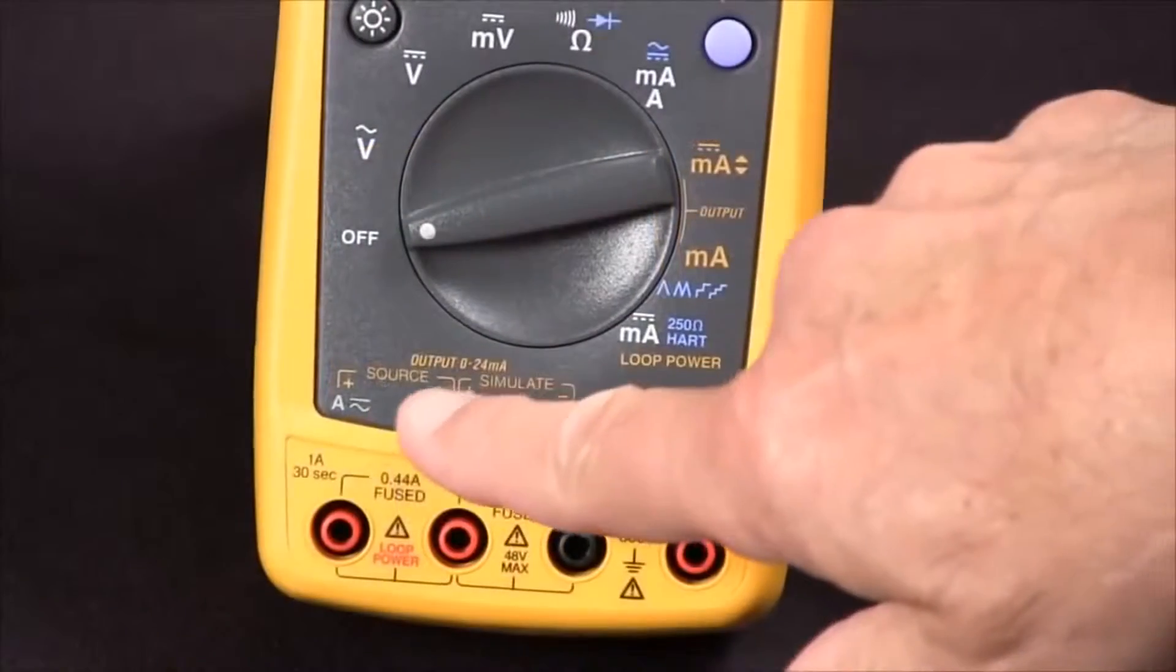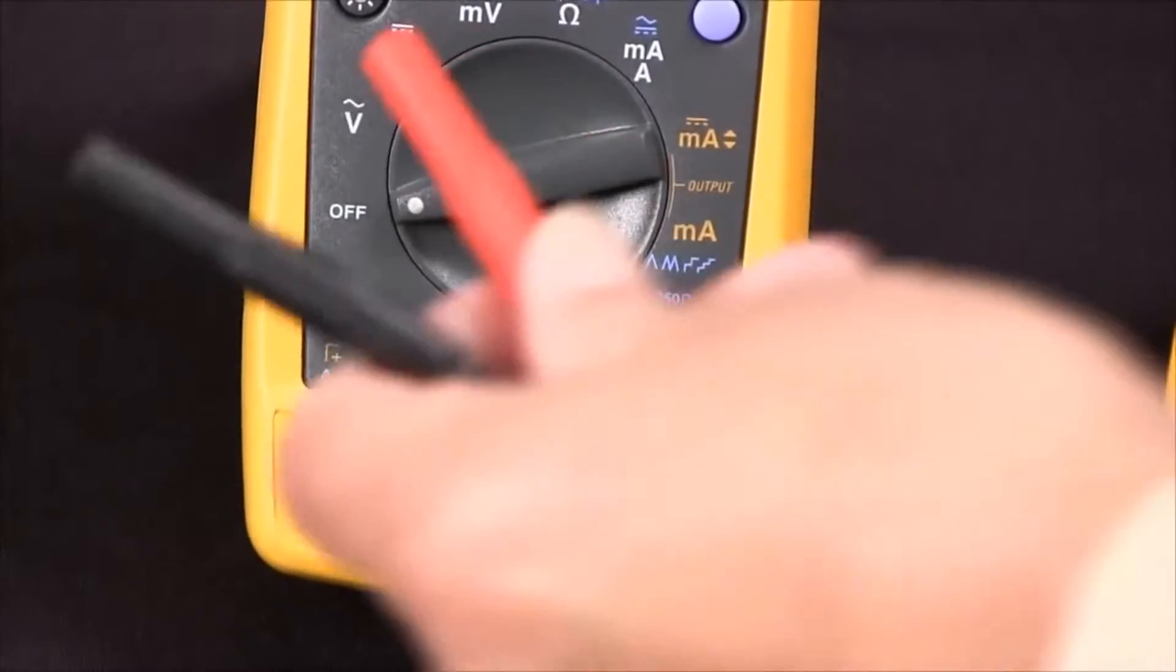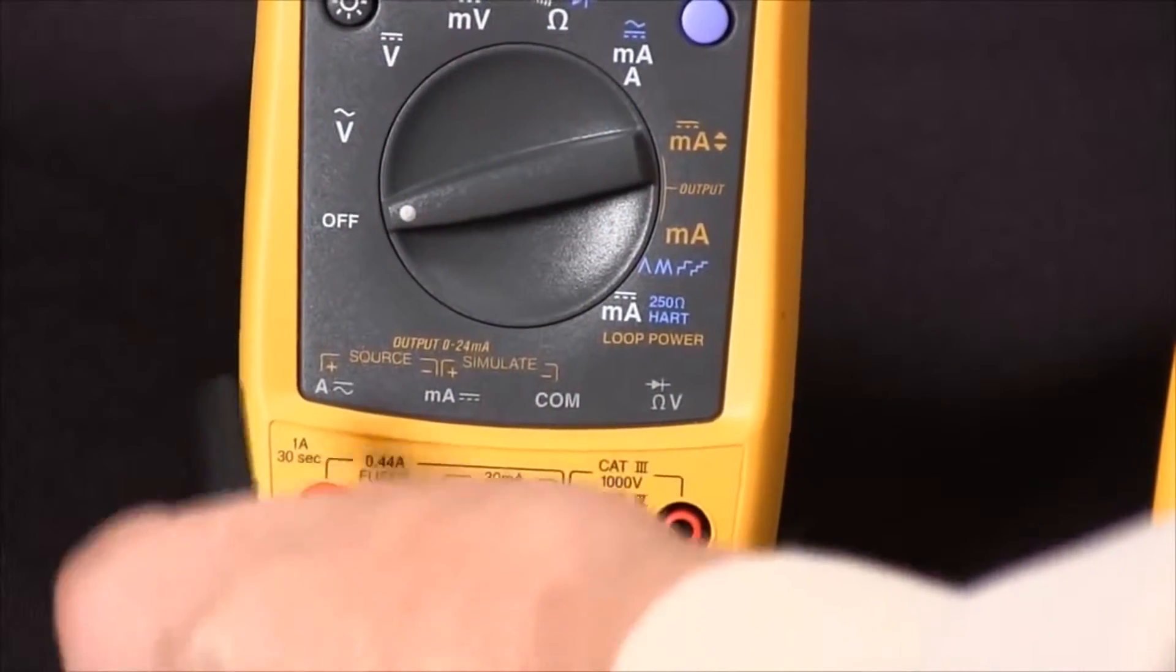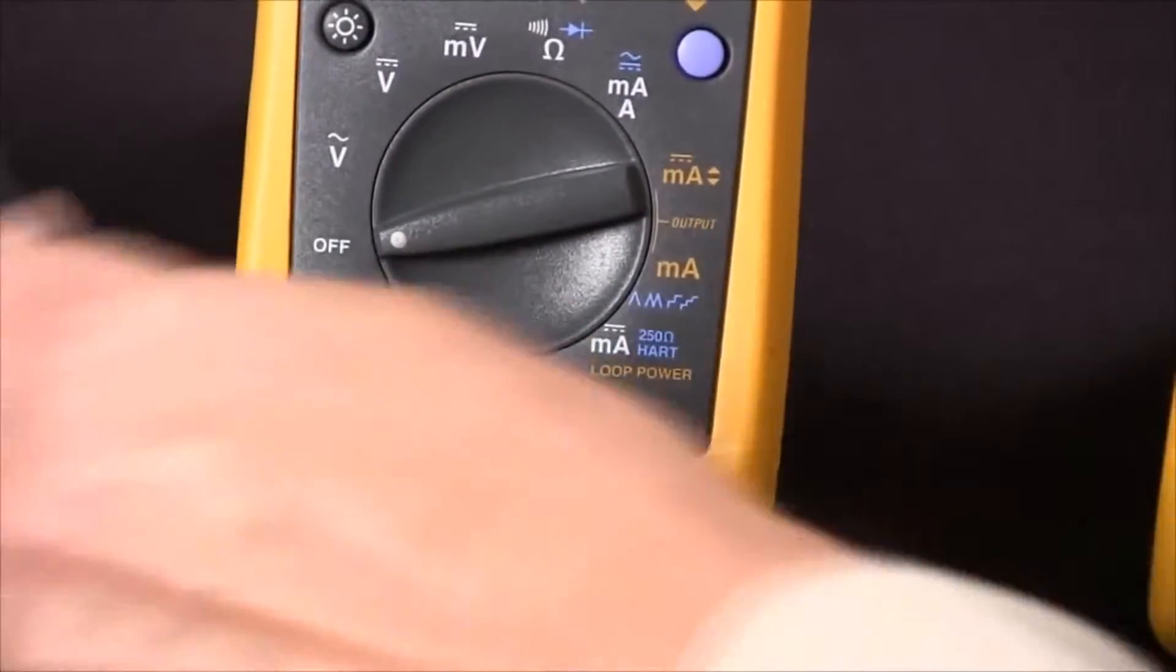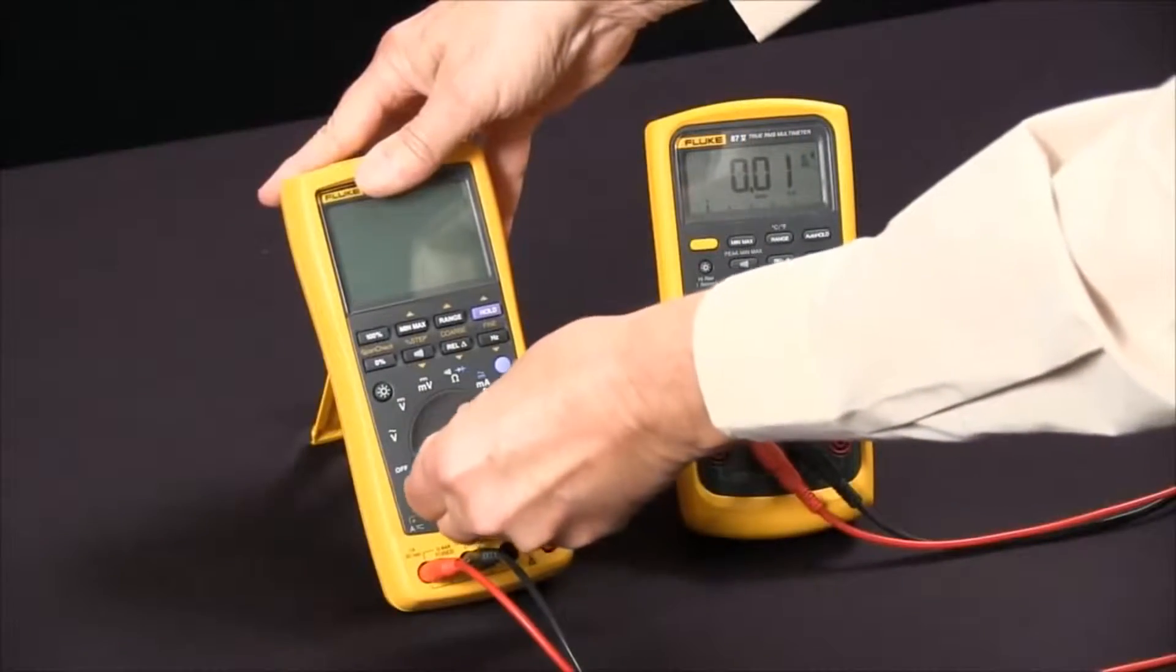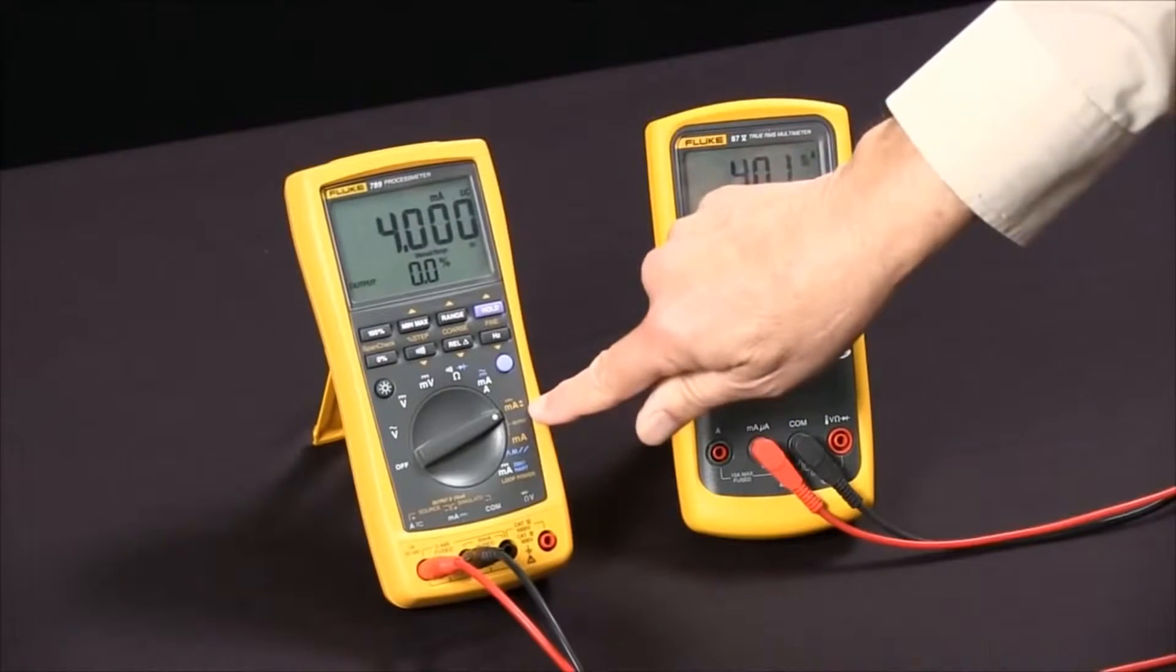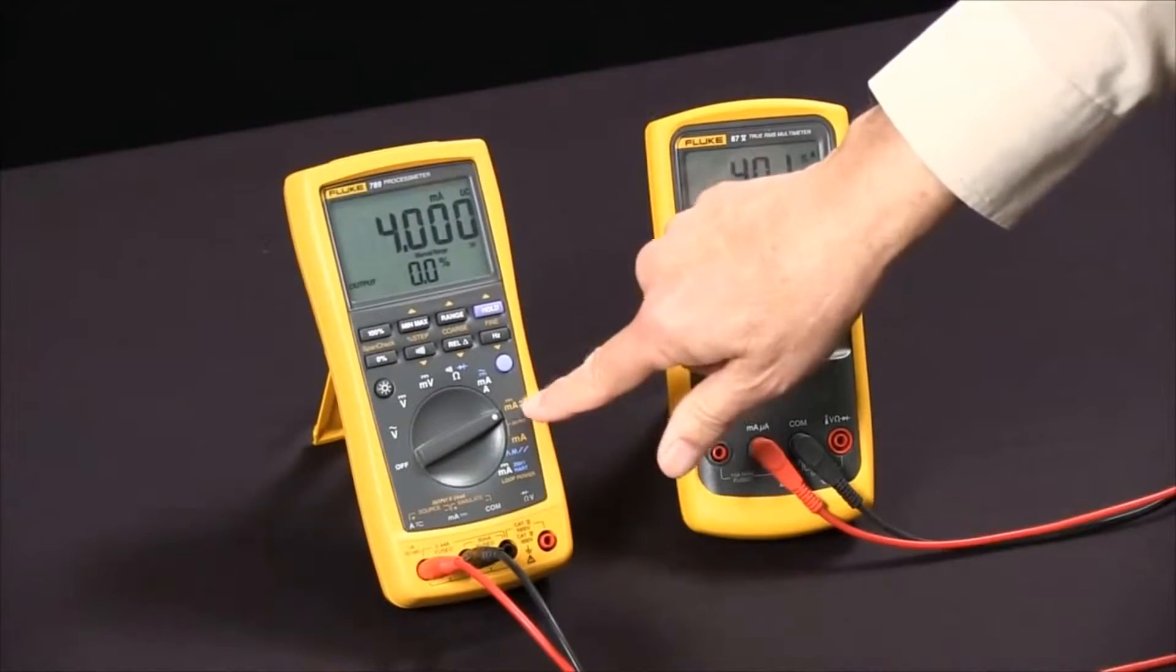We're going to come over here to the source plus and minus output and attach our meter. Then we'll rotate the rotary knob over to the DC milliamp position. From this point we have several choices to control it.